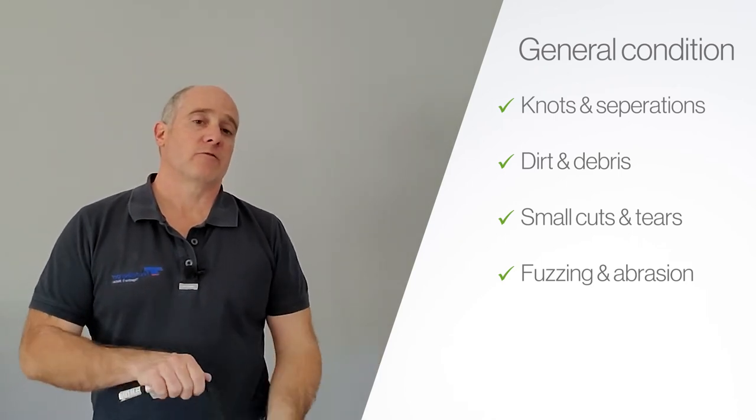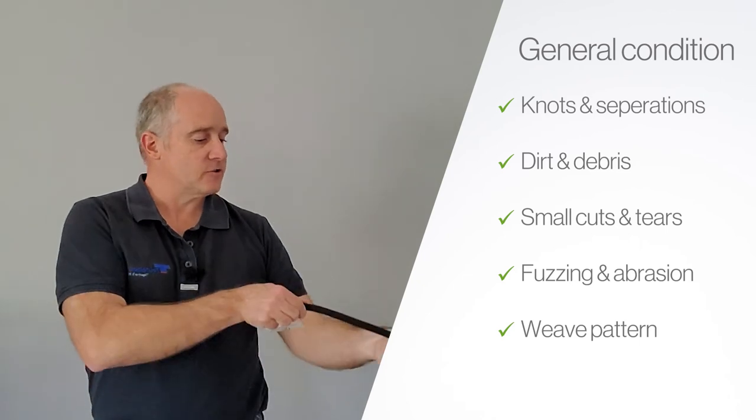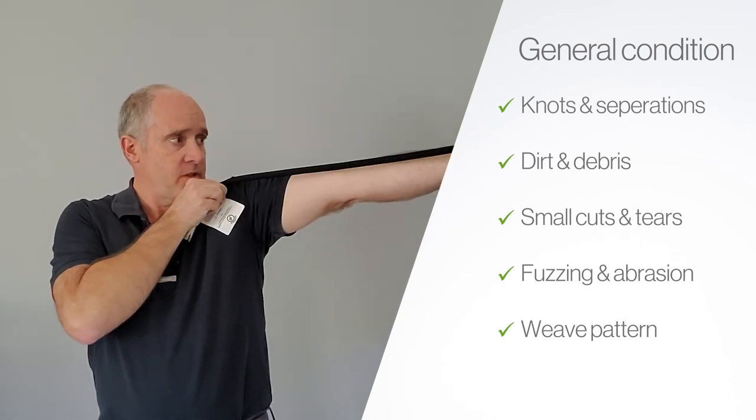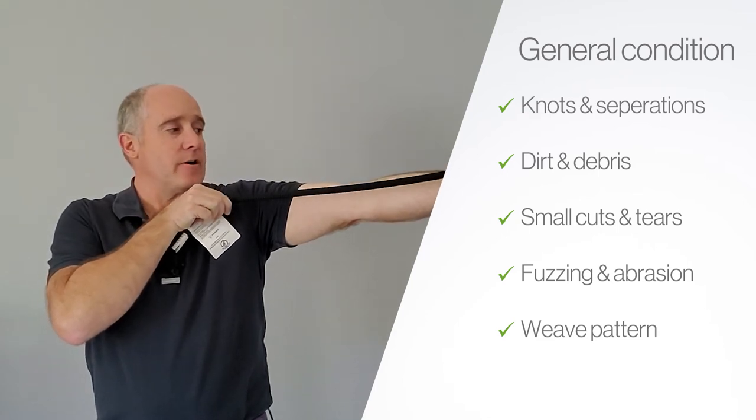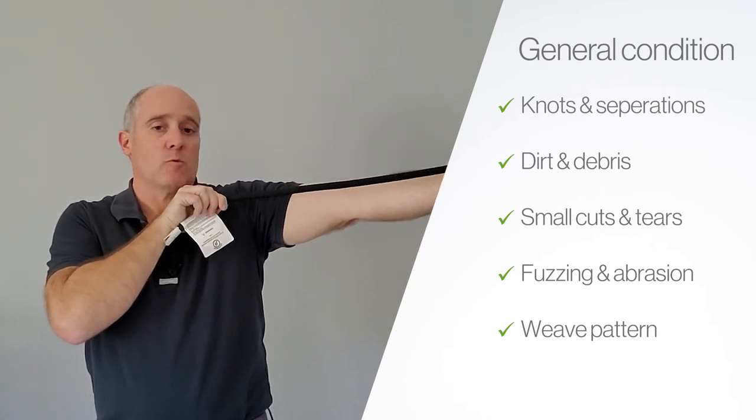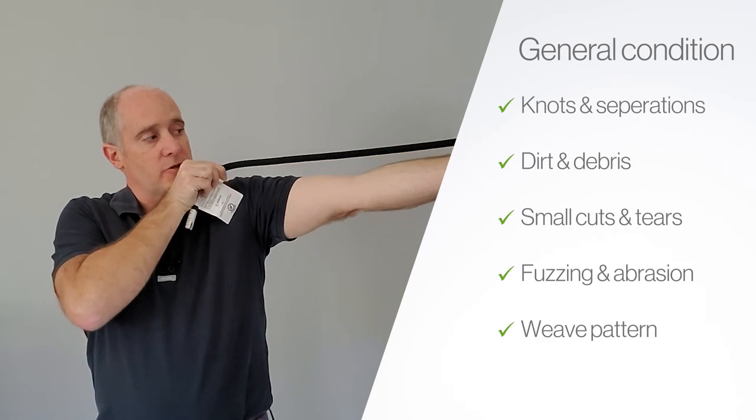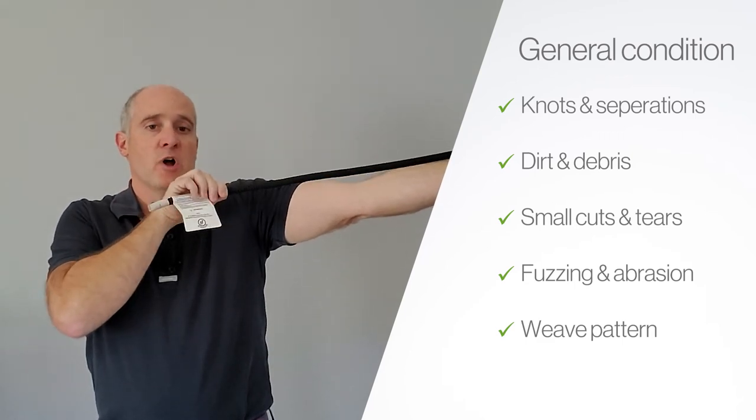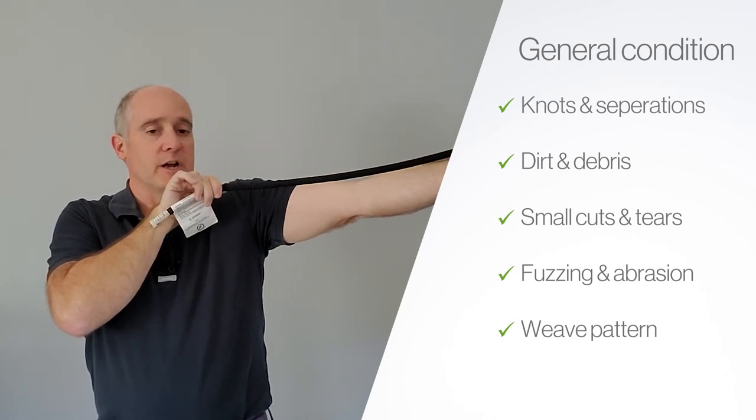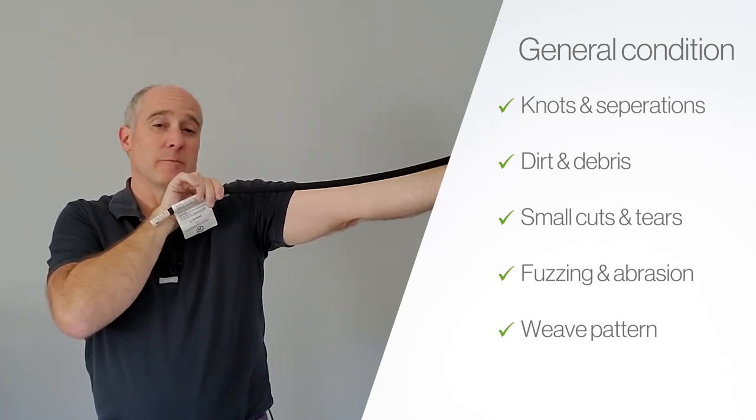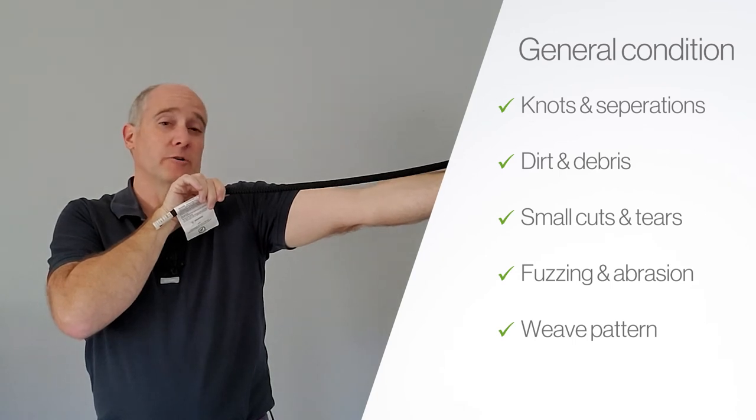The other thing you need to check for is the weave pattern itself. So when you pull that rope down, you can follow the pattern of the weave, not the color pattern, but the pattern of the actual woven yarns. You want to make sure that that is straight through the rope, not twisted, not kinked, not causing any problems there because those are signs of possible damage to the sheath, the core or shock loading of the rope itself.